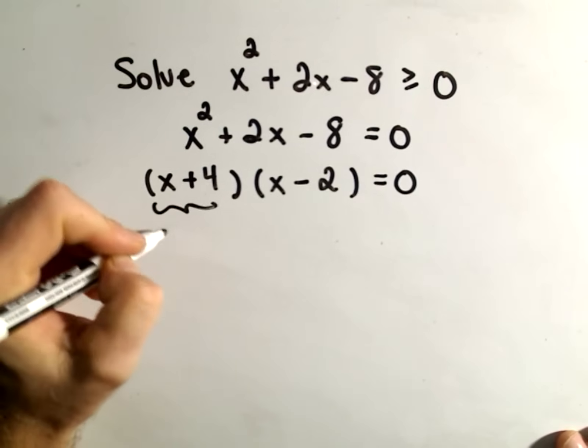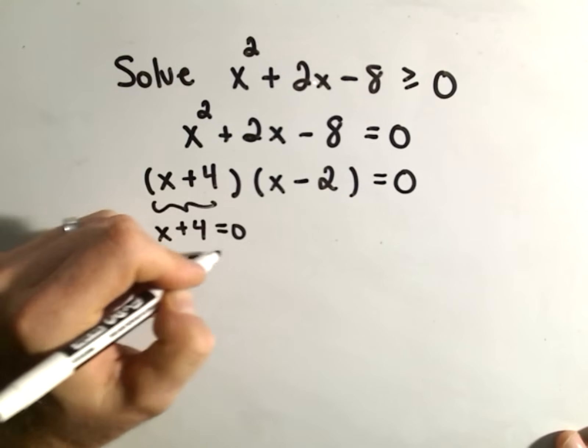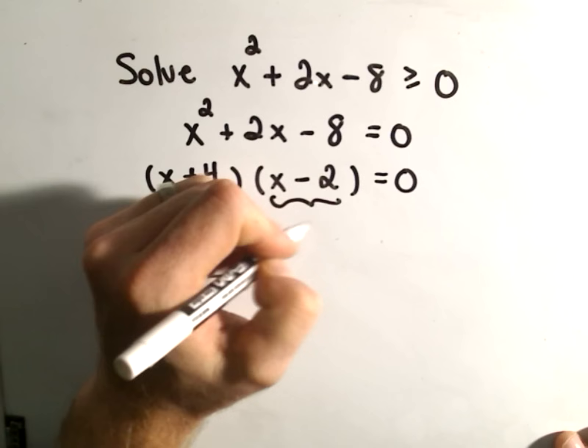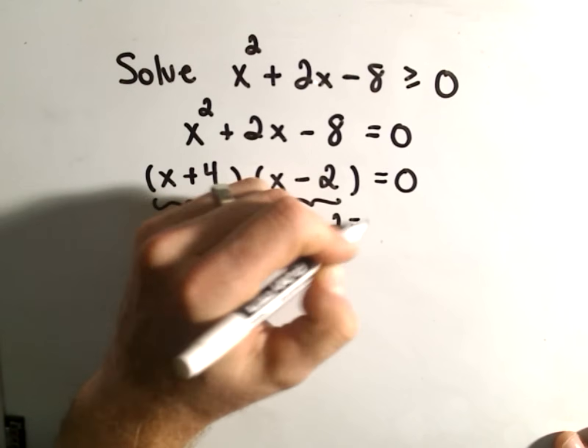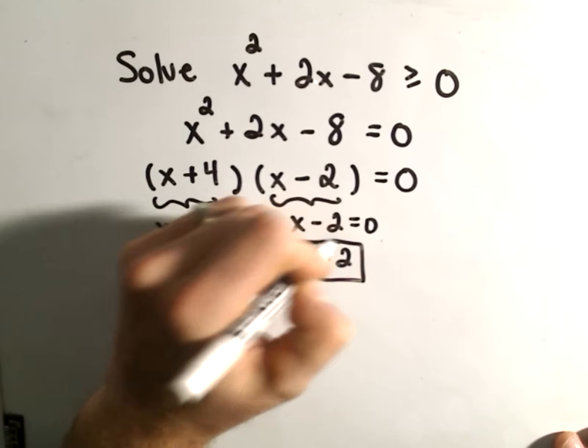So then we set each piece equal to 0. So we'll get x plus 4 equals 0, or x equals negative 4. We'll do the same thing with the other part, x minus 2 equals 0. So if we add, we'll simply get x equals 2.